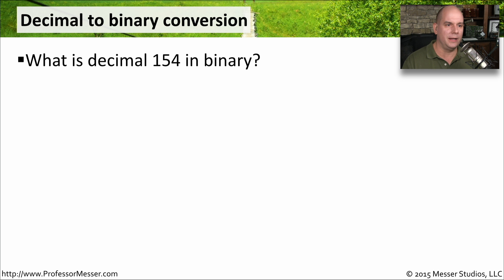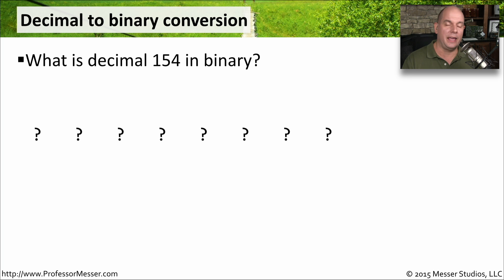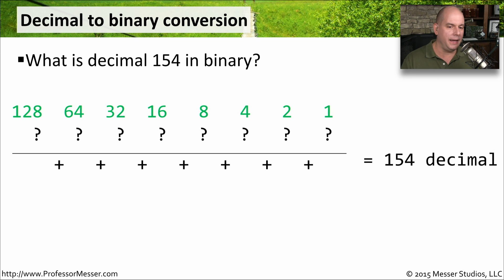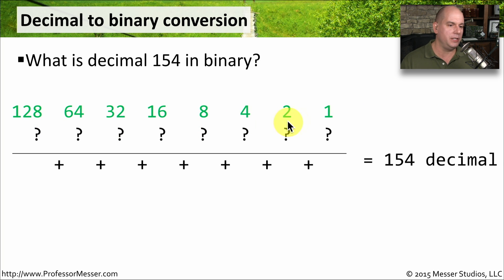Now let's reverse this process. Let's take a decimal number and determine what its binary equivalent is. This process isn't quite as straightforward, but we're going to work backwards — you'll see it's still an easy process. We bring down our conversion chart across the top as before, but we leave the binary positions blank. Now we want to calculate 154 decimal. What's interesting is that there's only one combination of these numbers that can add up to 154.